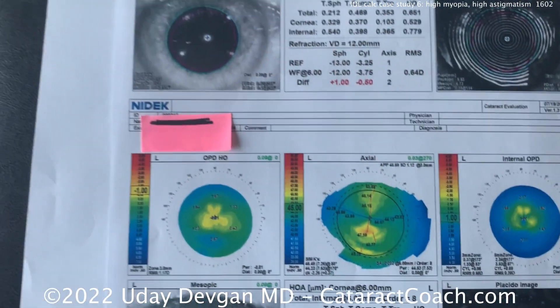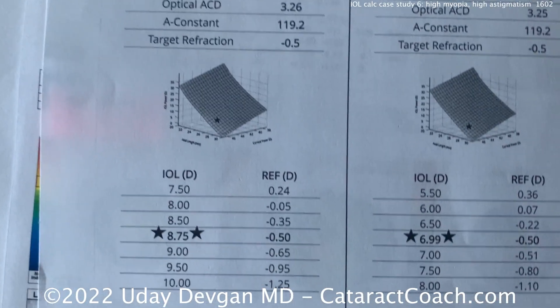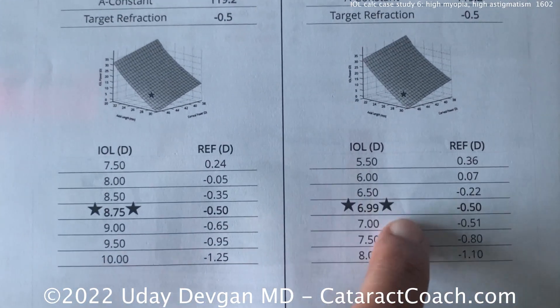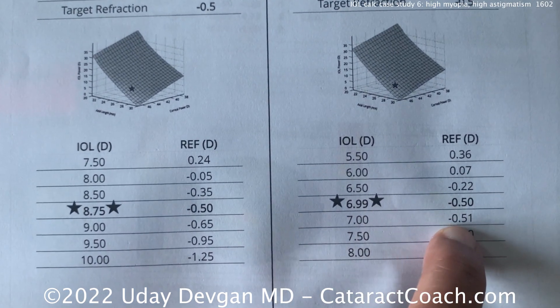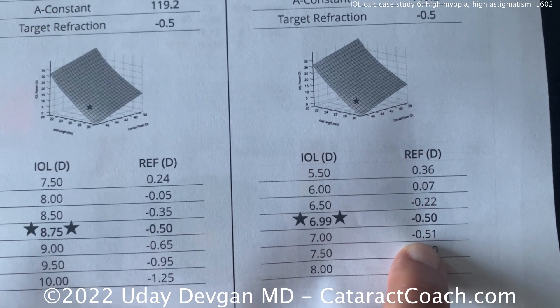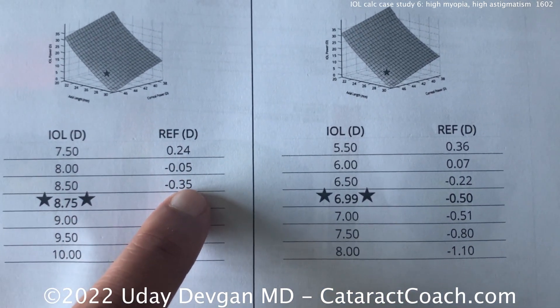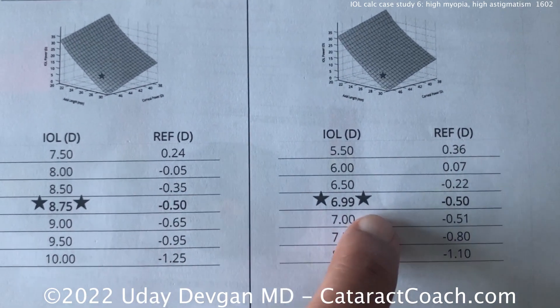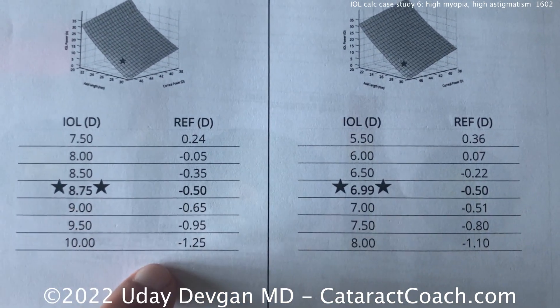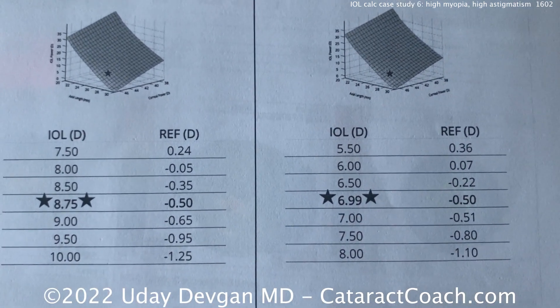In a case like this, the patient says he absolutely wants plano — but you don't want plano, trust me. Do this eye first: put the 7-diopter in, and you're going to end up at about minus a half. The patient will probably be very, very thrilled. If he wants the same in the other eye, put a 9 or maybe an 8.5 for a little better distance. Or perhaps he'll be happy with this distance and you can cheat the other eye for a little more myopia — maybe a 10-diopter or a 9.5. Great case, thanks for watching.